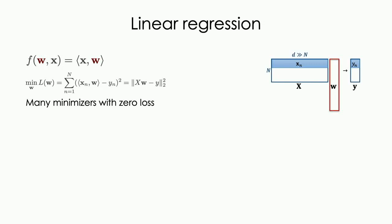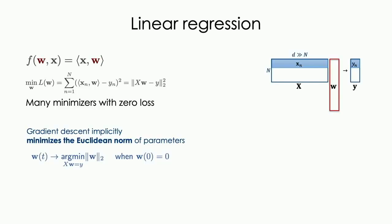We'll start with the simplest linear model: the least squares problem. It's a linear regression problem, but an under-determined one — the number of data points is much smaller than the dimension of the parameter we're learning. As a consequence, there are many solutions which perfectly fit the data and give zero error. In this case, we can ask what happens if we run different optimization algorithms on this objective.